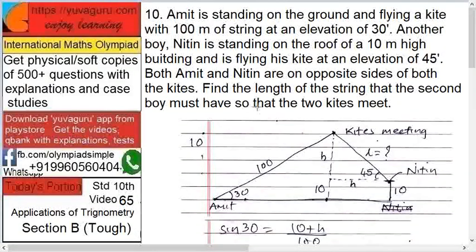See, this is Amit. The string is 100 meters and the angle is 30 degrees. Now Nitin is not at the level of Amit - see here it's cut over here. Nitin is 10 meters high, right? So Nitin is over here.